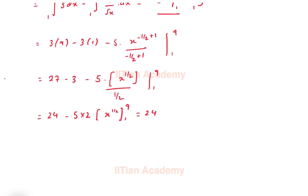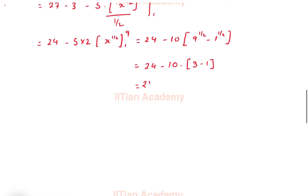So this is 24 minus 10 into (9 raised to the power half minus 1 raised to the power half). What we get is 24 minus 10 into (square root of 9 is 3, square root of 1 is 1). So we get 24 minus 10 into 2, or 24 minus 20, which equals 4.